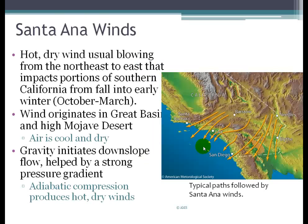Santa Ana winds are a type of Chinook wind that blow in the Southern California area. Hot, dry desert winds form over the Mojave Desert, which is very hot, and these winds develop from fall into early winter — when the desert is still superheated from summer. There are mountain ranges in Southern California, and we get this offshore flow with the winds taking different paths as Santa Ana winds. The gravity-driven downslope flow pushes those winds toward the surface, and adiabatic compression heats them even more, producing very hot, dry winds that blow off the coast of California. This is typically a time when forest fires can be a real threat.